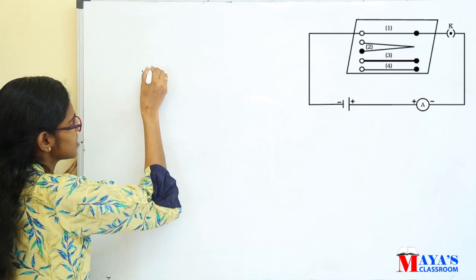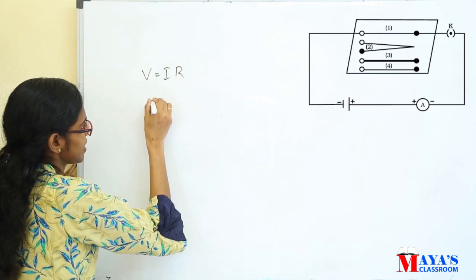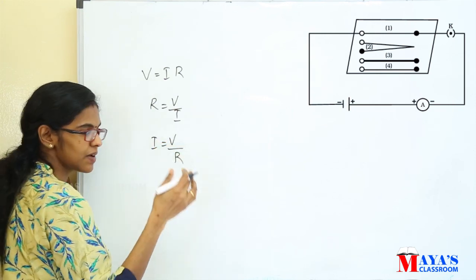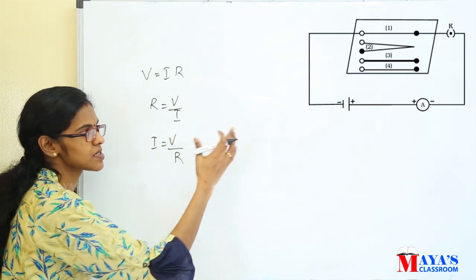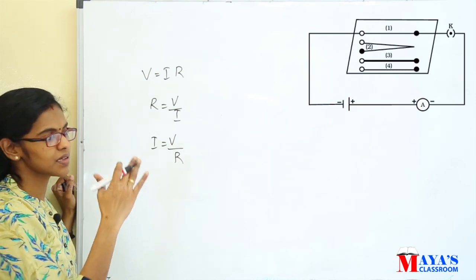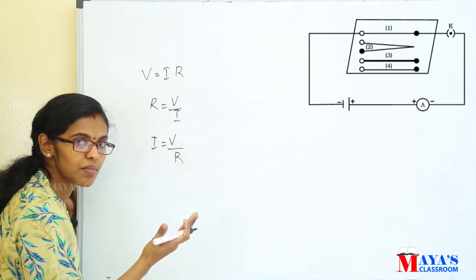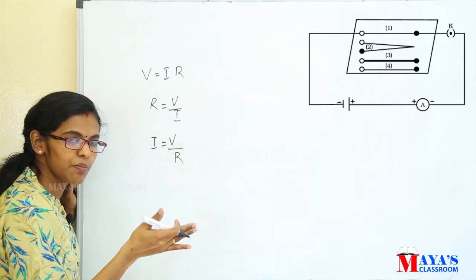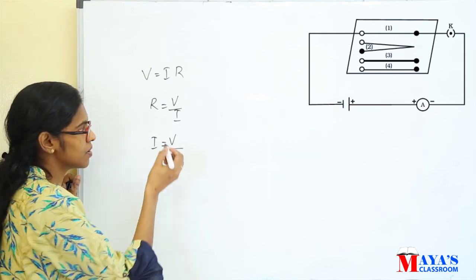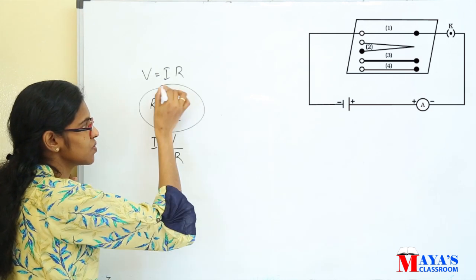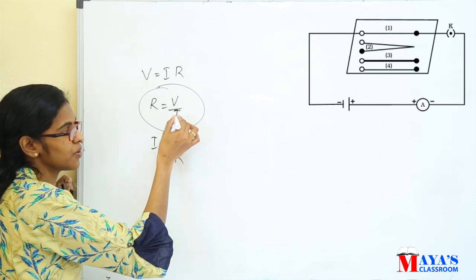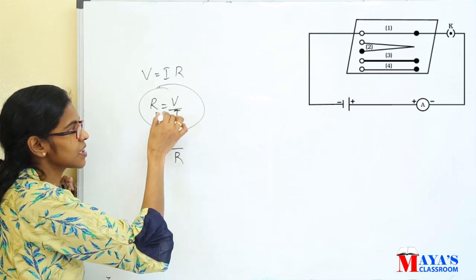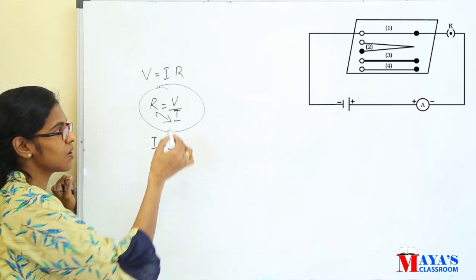We know by Ohm's law that V is equal to IR, or R is equal to V by I, or I is equal to V by R. In the first case, we got a particular ammeter reading. In the second case, the length is doubled and the ammeter reading decreased — meaning the current decreased, so resistance is higher. Resistance is inversely proportional to current at constant voltage.